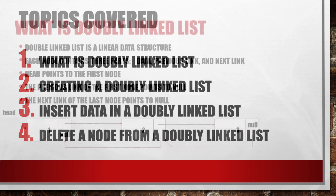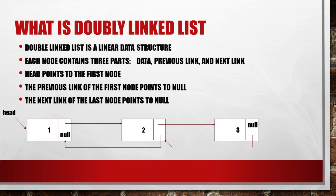A doubly linked list is a linear data structure. Each node contains three parts: data, a previous link, and a next link. The head points to the first node. The previous link of the first node points to null. The next pointer of the last node points to null.